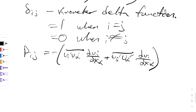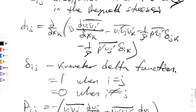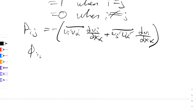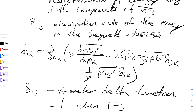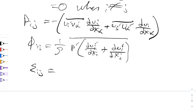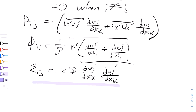For Φij, the pressure-strain correlation and redistribution: Φij equals 1 over rho — density is constant in this analysis — of p prime times the quantity partial uj prime partial xi plus partial ui prime over partial xj, all barred. And finally, the last term εij, the dissipation rate of energy in the Reynolds stresses: εij equals kinematic viscosity of partial ui prime partial xk times partial uj prime partial xk, all barred. This is a very important definition — the dissipation.